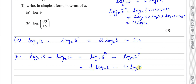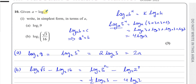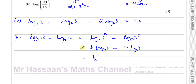We know that log to the base of something of itself equals 1, because if log to the base a of b equals c means a to the power of c equals b, then 2 to the power of 1 gives 2, so log to the base 2 of 2 equals 1. So this gives a half times a minus 4 times 1, which is a half a minus 4. That's the answer for part b.